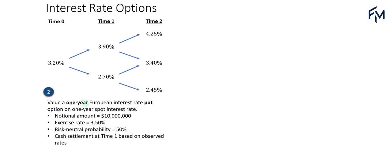For example two, we value a one-year European interest rate put option on the one-year spot interest rate. All the details are the same as example one: notional amount is $10 million, exercise rate is 3.5%, risk-neutral probability is 50%, and cash settlement is at time one. We use the rates observed at time one, and calculate the put option payoff at expiration.